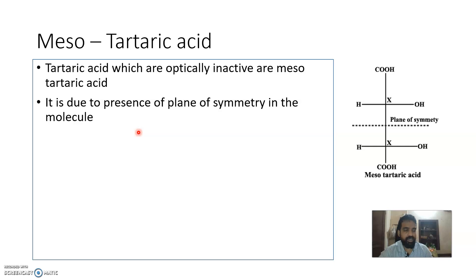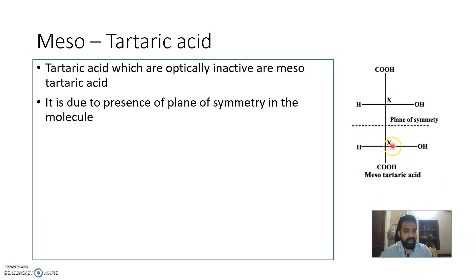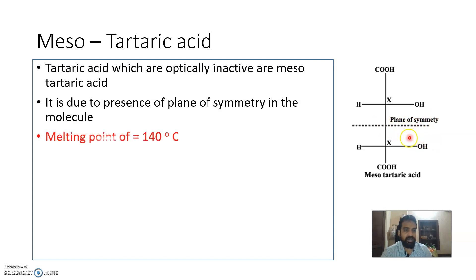The basic condition for optical activity is: there must be a chiral carbon and there should not be any symmetry element. In mesotartaric acid, chiral carbons are present — each has OH, COOH, H, and CHOH attached, giving four different groups. But the molecule has a plane of symmetry, so it is not optically active.